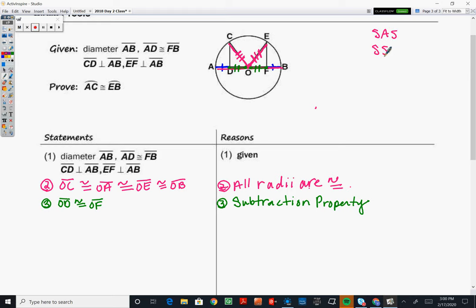And remember with hypotenuse leg, in order to have hypotenuse leg, we need to have a right triangle. So do we have a right triangle? And the answer is yes. And it's because we have some perpendicular segments which give us right angles. So I'm going to note that angle one right here is a right angle because CD is perpendicular to AB.